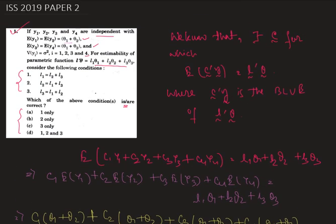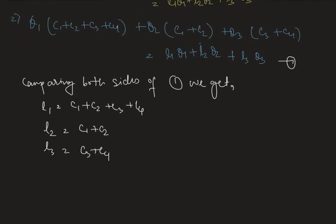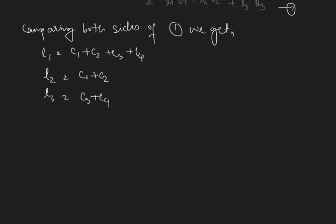Now check the first option, which is l1 equals l2 plus l3. As we can see, l1 equals (c1 plus c2) plus (c3 plus c4), which is exactly l2 plus l3. Therefore the first option is the correct one.